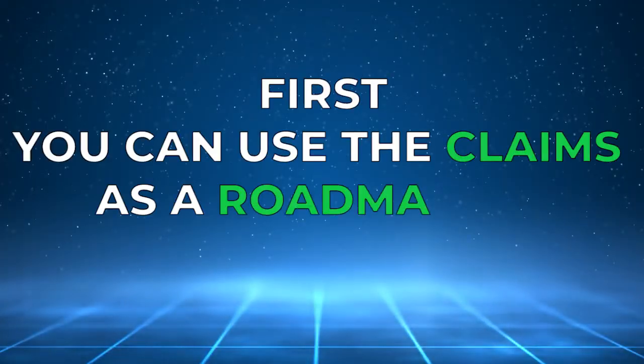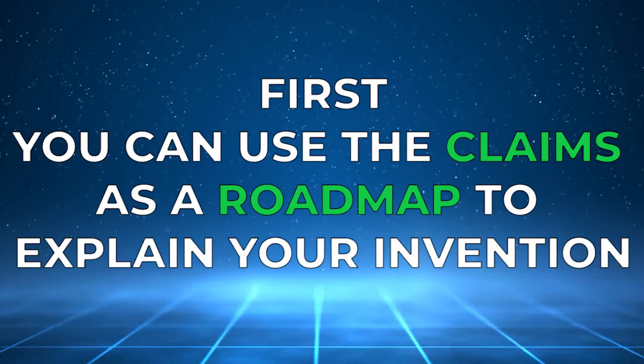Now, to the organization of the detailed description — how do we explain all of the items in your outline in an orderly fashion so that it's easily digestible and understandable? There are three different ways to organize the content. First, you can use the claims as a roadmap to explain your invention. The claims are supposed to include the point of novelty — the key difference between your invention and the prior art. If you explain each word in the claim, you would have described the claimed invention.